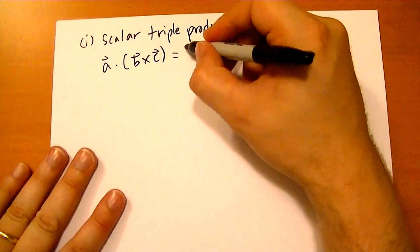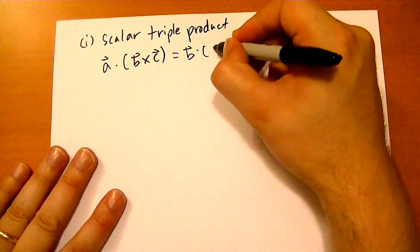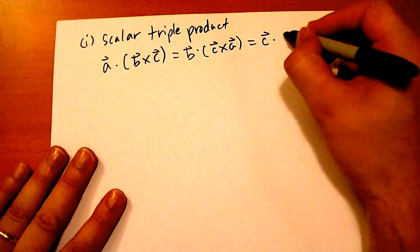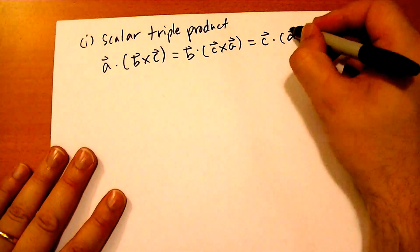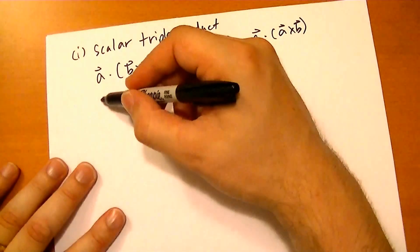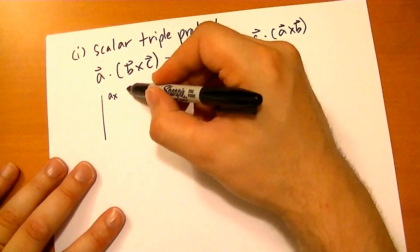As you might imagine, it ends with a dot product and on the inside is the cross product. The interesting property about this one is you can rotate the vectors through, as long as you preserve the order, and they're all equal. A vector cross B vector. And if you want to find what the value is, it's really easy to take the determinant.